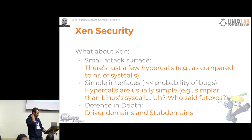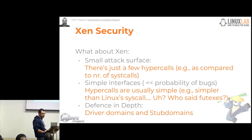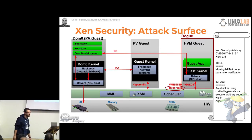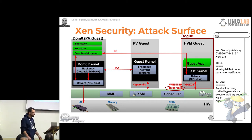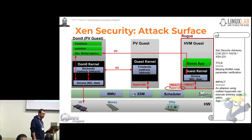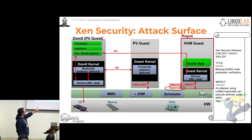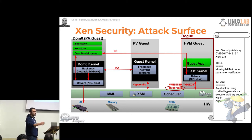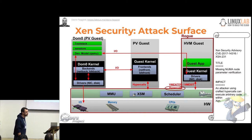For applying defense in depth, we have driver domains and stub domains. I would like to walk you through a few examples by looking at actual security advisories released because of a bug being found in Xen or in components of the Xen architecture. This first one is a bug in a hypercall. We have a rogue HVM guest which can make hypercalls, and there is a bug in the hypercall. It exploits it and manages to take over the hypervisor — at which point it's game over, because if an attacker gets to the hypervisor, they can do whatever they want.